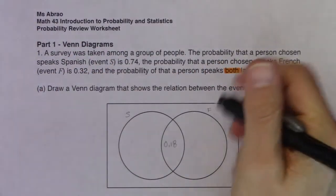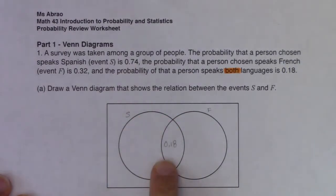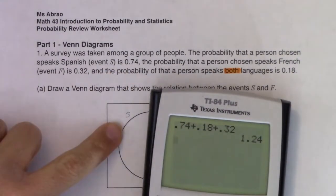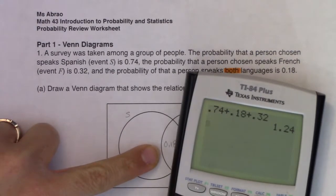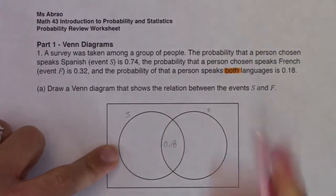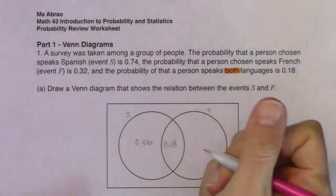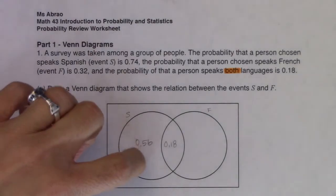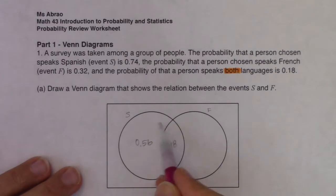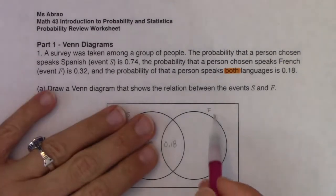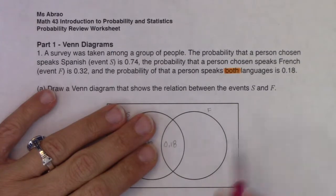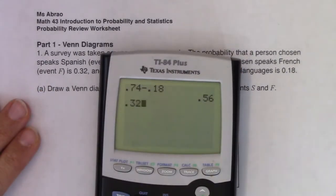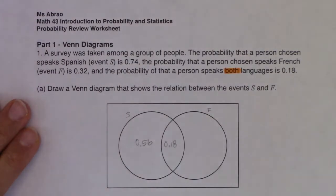Let's back up. The entire S circle — left moon plus football — has to add up to 74%. I already know 18% is in the football, so I subtract: 74% minus 18% gives the left moon 56%. That's the probability someone spoke only Spanish. By the same rationale, the right moon plus football has to add up to 32%. So 32% minus 18% gives the right moon 14% — those speak only French.